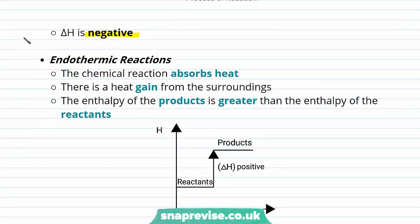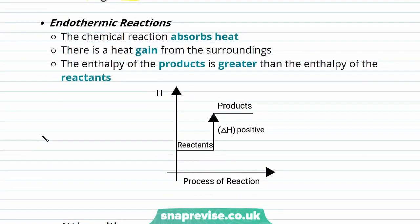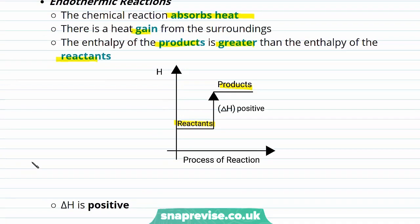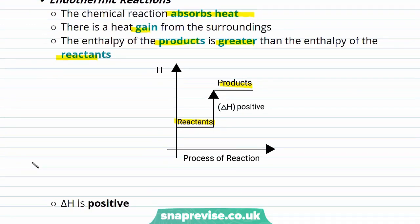In contrast, endothermic reactions absorb heat and there is a heat gain from the surroundings. The enthalpy of the product is greater than the enthalpy of the reactants — our reactants have a lower enthalpy than our products — and as a result, delta H, the enthalpy change, is positive.